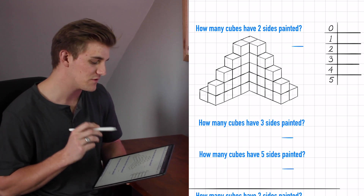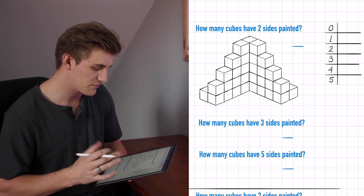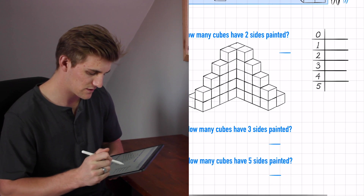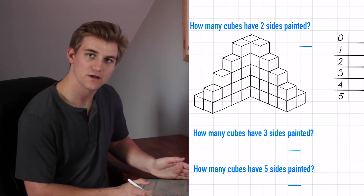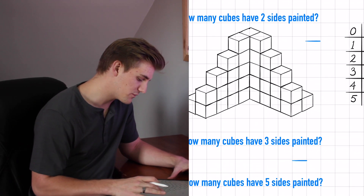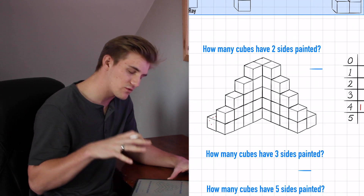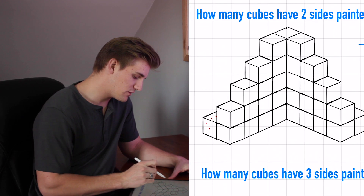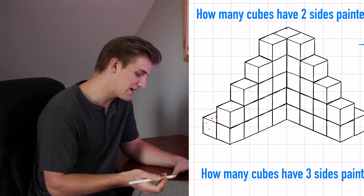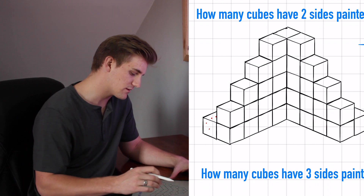This third example is an interesting shape — I'm not sure you'd see this exactly on the DAT, but it's important for a couple of reasons. This is also a different angle for looking at the figure. Even though we have this cube here, there's nothing behind it because we can't see anything behind it, so we're really just going to have these rows right here.